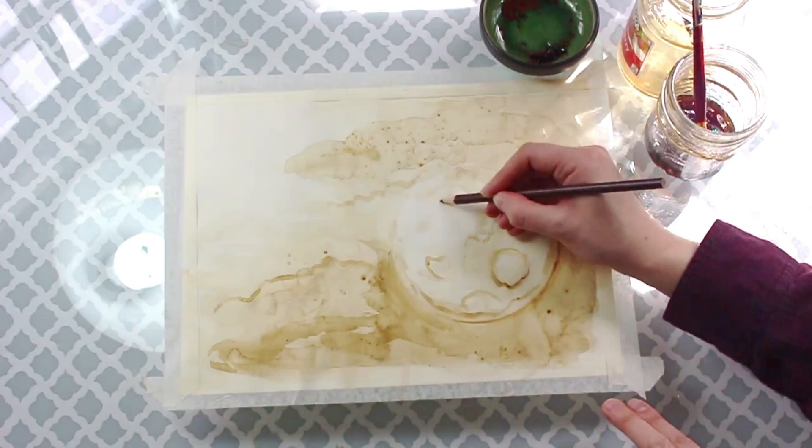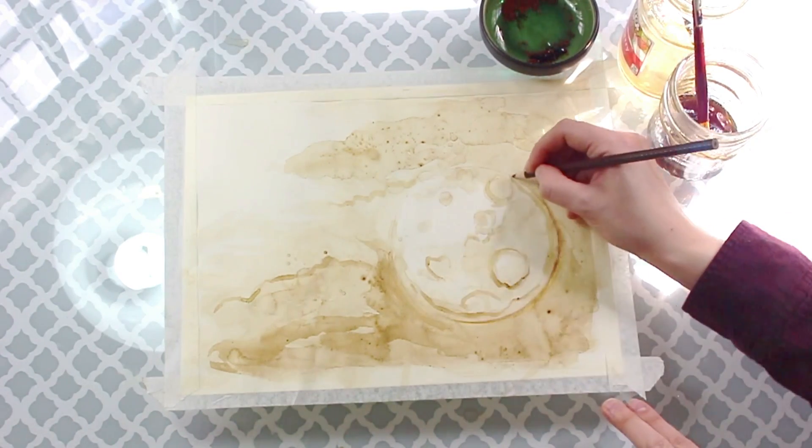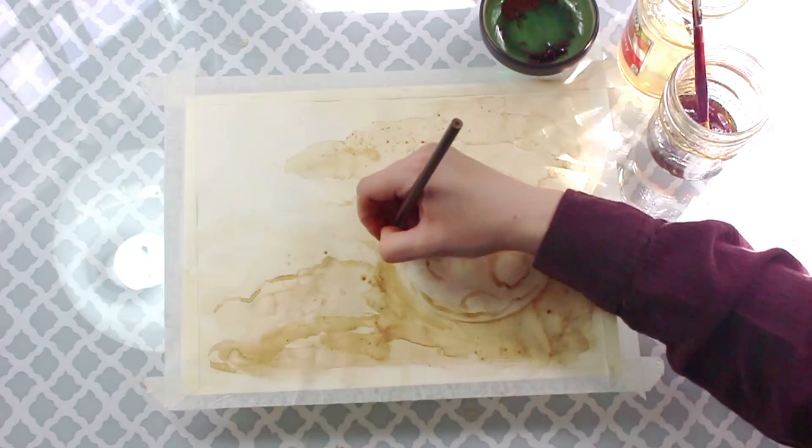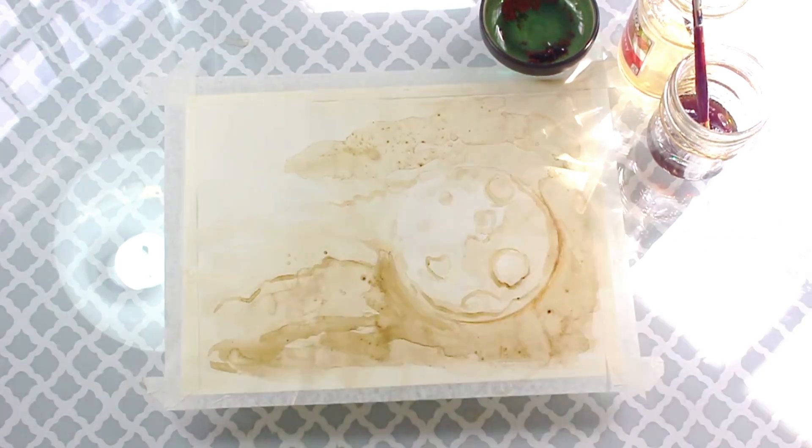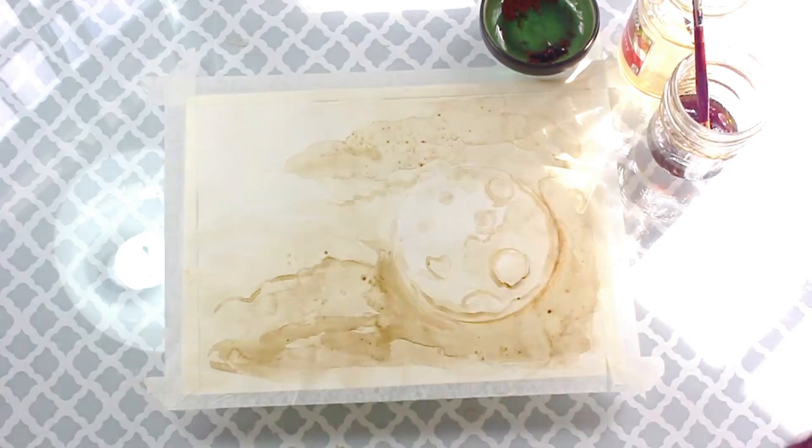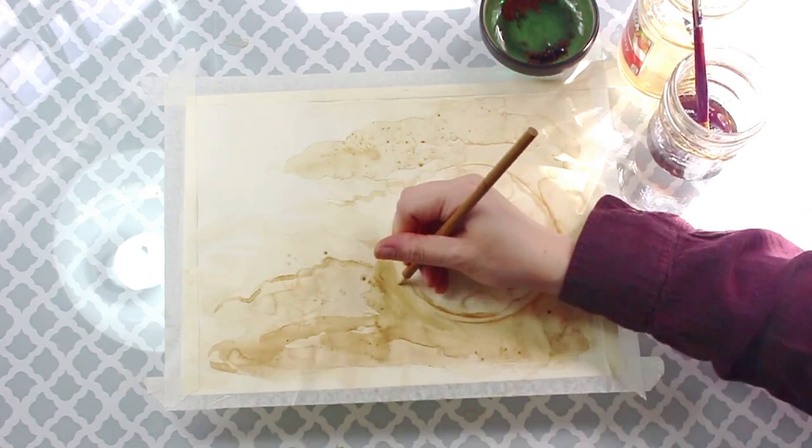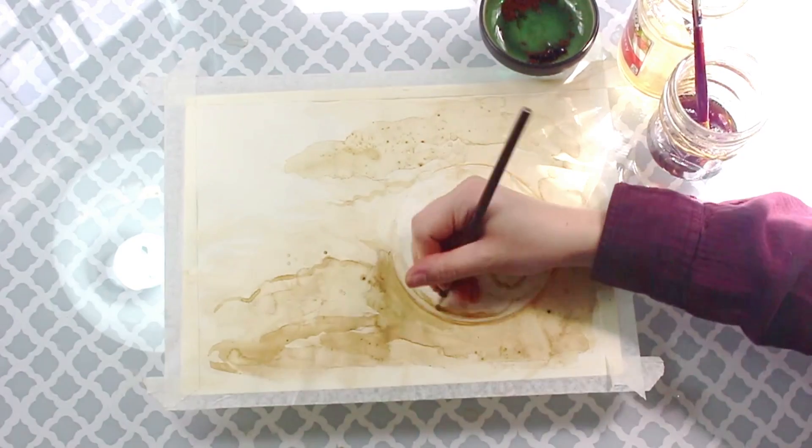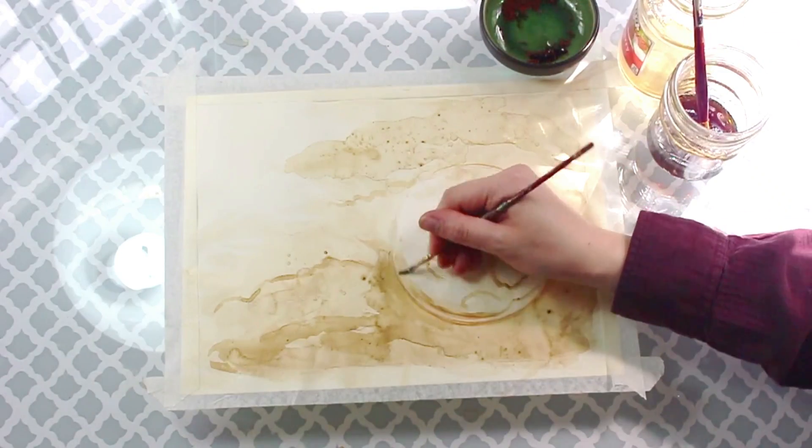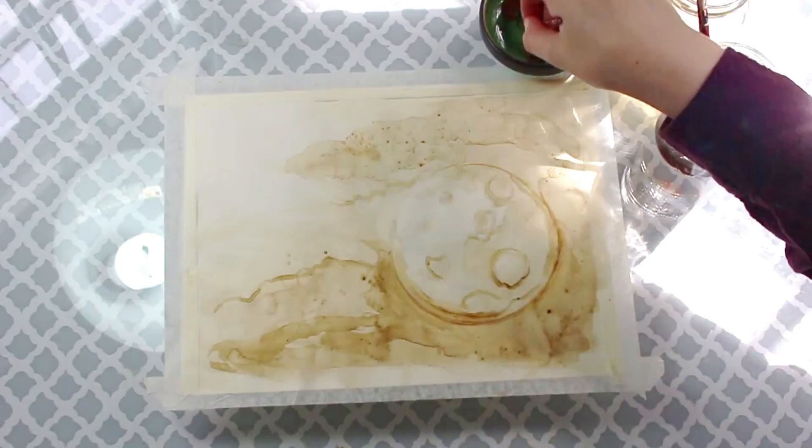These colors I'm using it's kind of just a brown and then a goldenrod color. The goldenrod color really helps to match the coffee tone and that dark brown will really punch things out. So as you can see this is looking pretty good.